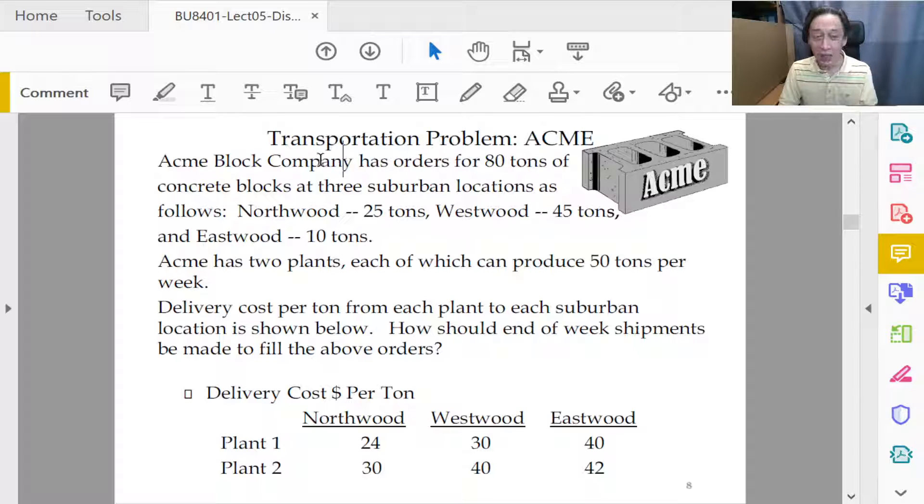So it means that the company here ACME Block has customers ordering 80 tons of concrete blocks. Now concrete blocks those are huge, one ton two ton concrete blocks very very heavy at three locations.